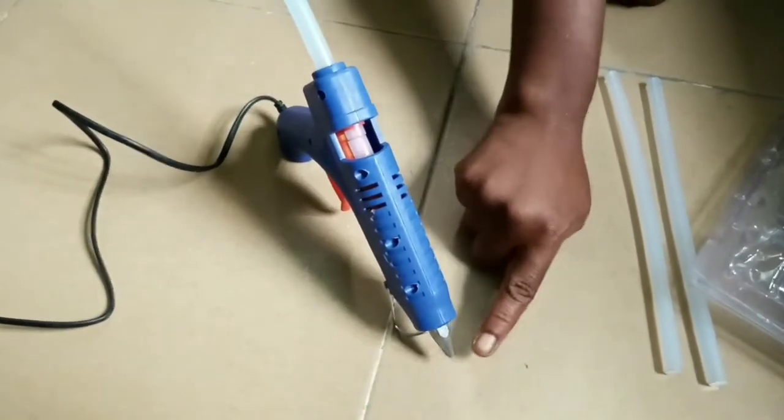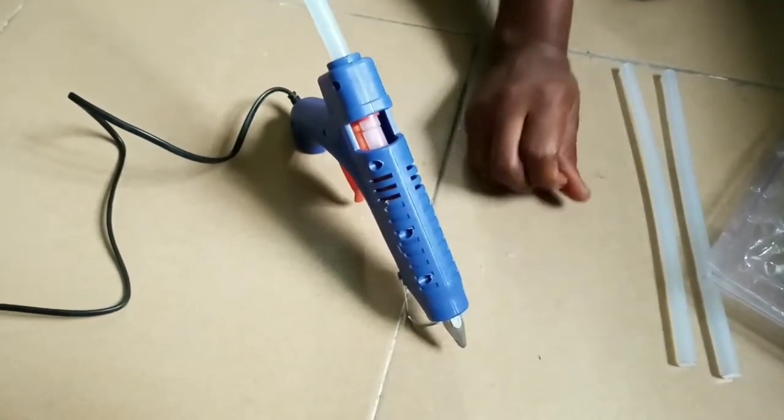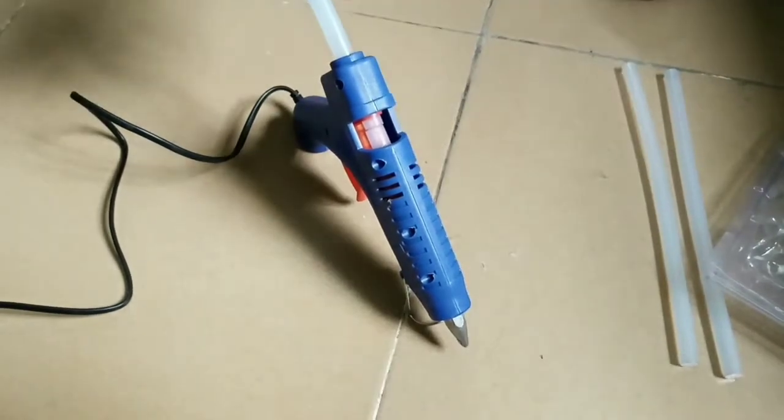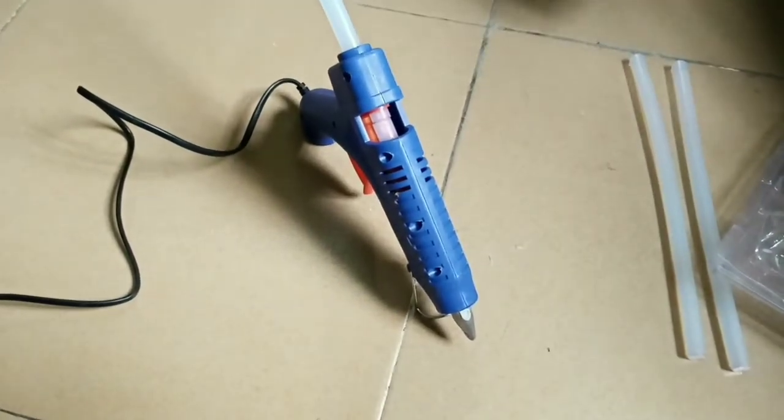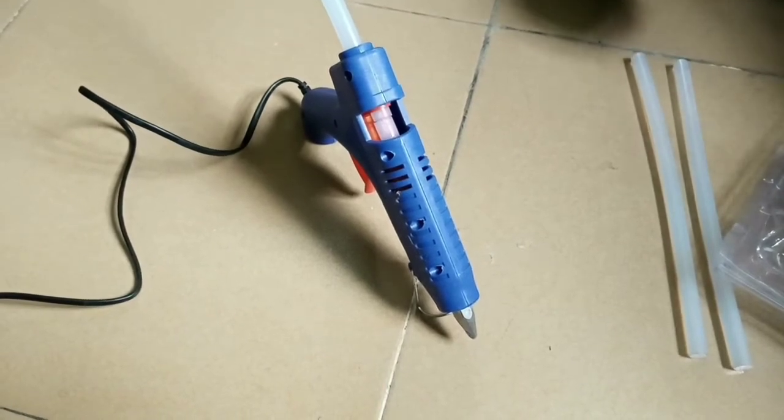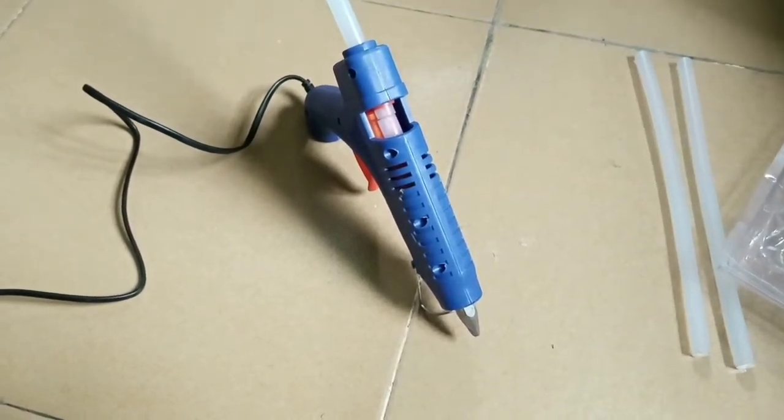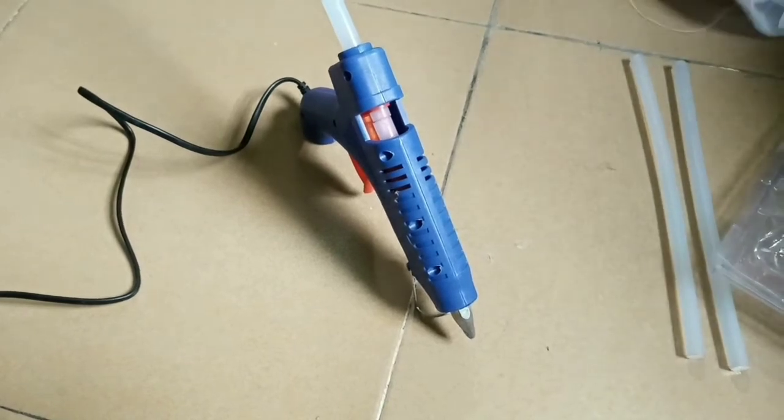As soon as it gets hot you see the glue start dripping. When you start dripping, meaning it's already melting the candle, then you can start using. So let's just wait a little and see when it gets hot. Let's see how we can use it.